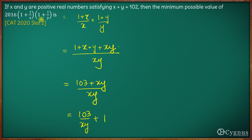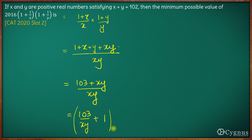Now we have to minimize this whole expression. The outer factor 2016 is a constant, so to minimize the whole expression we need to minimize the value of 103 upon xy plus 1. This expression will be minimum when xy is maximum possible, because when the denominator is maximum, this fraction will be minimum.